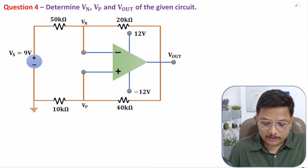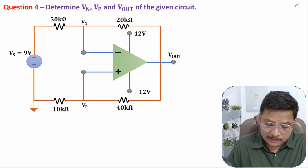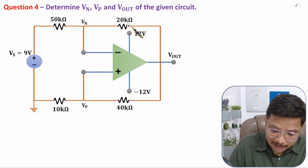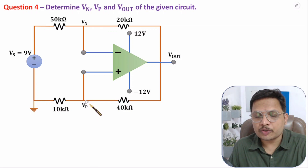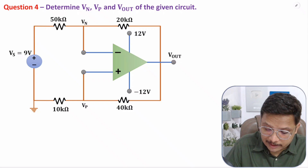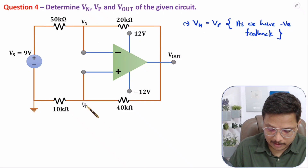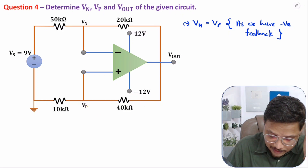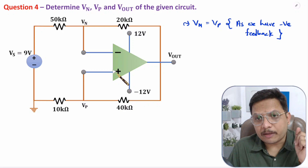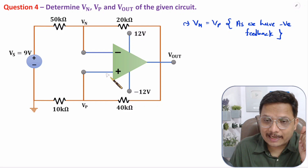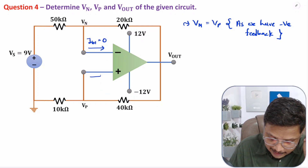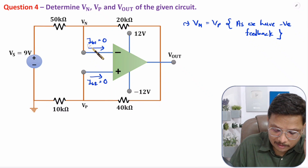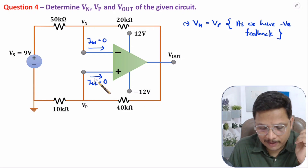So how to solve this question? Before you start with the solution, there are a few basic things you should know. We have negative feedback here. Because of negative feedback, the voltage at the inverting terminal and the voltage at the non-inverting terminal should be equal — that is, Vn equals Vp. Second, with this op-amp, input impedance is very high, so current inside the input terminals is negligible. Current Ib1 and Ib2 are both assumed to be zero.